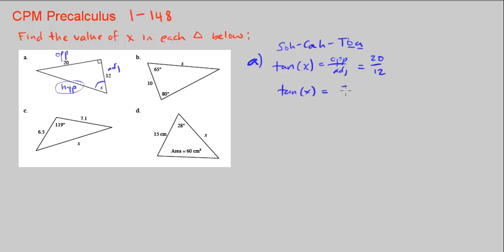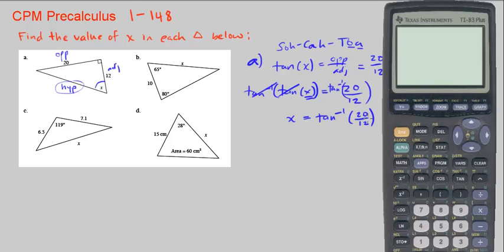So tan of x equals 20 over 12. To unwrap it, we need to use the inverse function of tan. We apply the inverse tan to both sides — tangent and its inverse cancel each other out, leaving just x. So x equals the inverse tan of 20 over 12. Let's bring out our calculators. Second tan gives us the inverse tan of 20 over 12. Making sure I'm in degrees mode, this is equal to approximately 59.04 degrees.